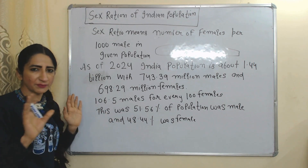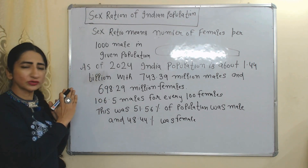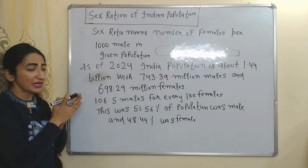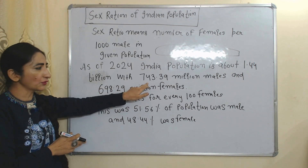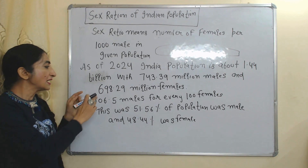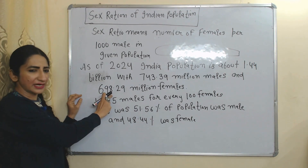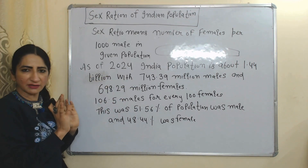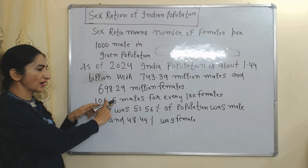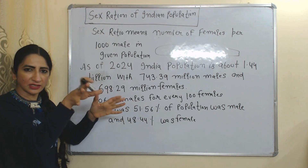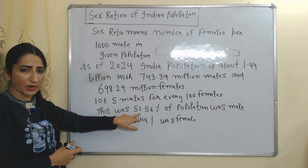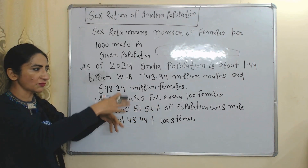As of 2024, India's population is about 1.44 billion, in which 743.39 million are males and 698.29 million are females. That means there are 106.5 males for every 100 females, or we can say 51.56% of the population is male and 48.44% is female.